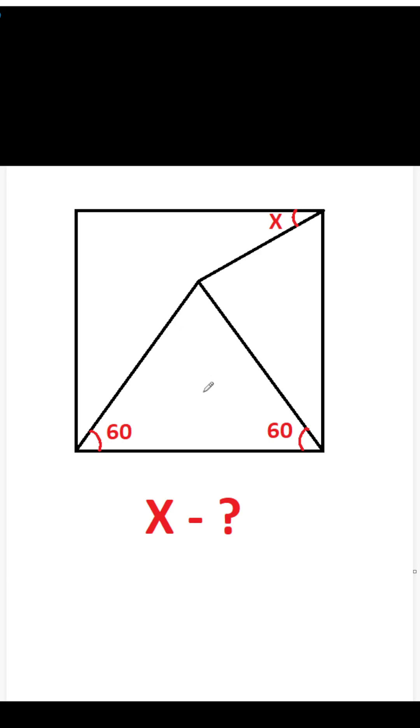Hi, the problem of International Olympiad Al-Kharizmi. I have to find an x here and we are given two angles 60 and 60. We know that this angle will be also 60 degrees because the top have to give us 180 degrees.